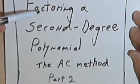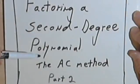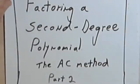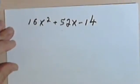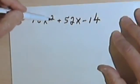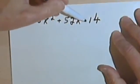This is going to be the second video about factoring a second-degree polynomial using the AC method. So here's the problem we're working with this time. I've got 16x squared plus 52x minus 14.